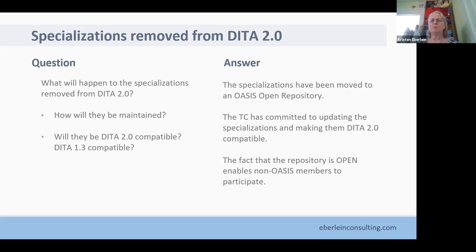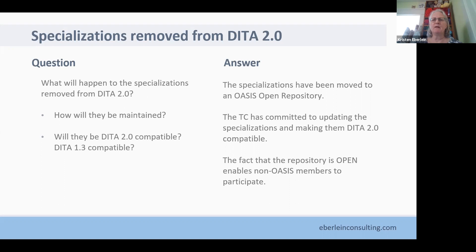People really wanted to know: where will these specializations be, who's going to maintain them, and will they be compatible with DITA 2.0 or DITA 1.3? Our answer is that we have set up an OASIS open repository where these specializations can be stored. An OASIS open repository is different from an OASIS technical committee repository — an open repository enables non-OASIS members to participate. We certainly hope the community will participate long term. The DITA technical committee has committed to updating these three specializations and making them DITA 2.0 compatible.